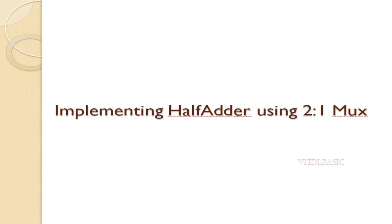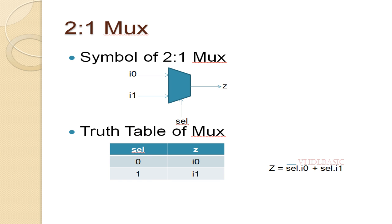First of all, we need to know what is a 2:1 mux. This is a simple diagram of a 2:1 mux. I0, I1, and select are the inputs; output Z is the output. Looking at the truth table: if select is 0, I0 will be assigned to output Z; if select is 1, I1 will be assigned to output Z.